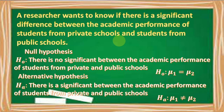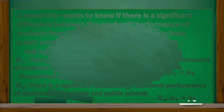Now let's have this last example. A researcher wants to know if there is a significant difference between the academic performance of students from private schools and students from public schools. Our null hypothesis will be: there is no significant difference between the academic performance of students from private and public schools. In symbol, we have mu sub 1 is equal to mu sub 2. And for the alternative hypothesis, we have: there is a significant difference between the academic performance of students from private and public schools. In symbol, we have mu sub 1 is not equal to mu sub 2.